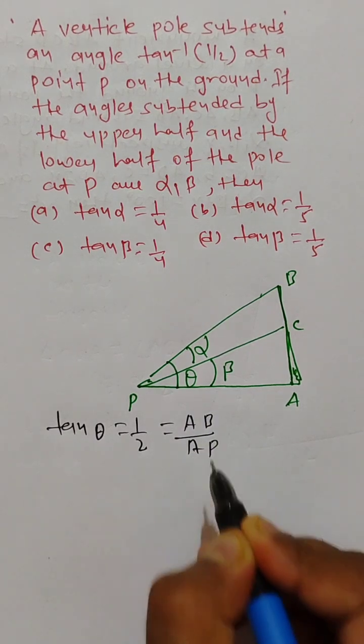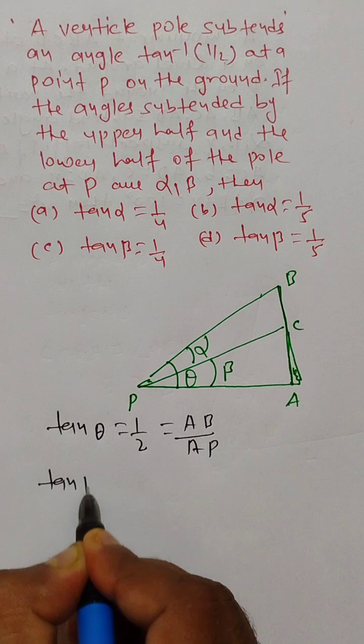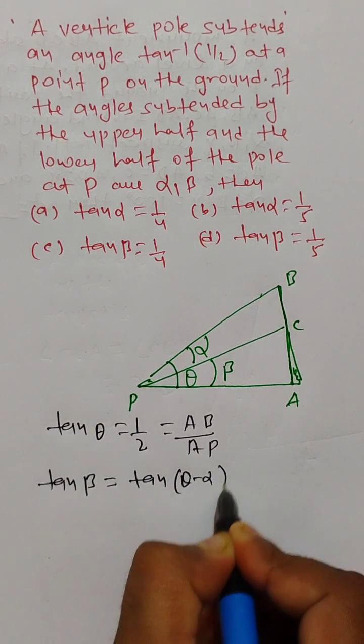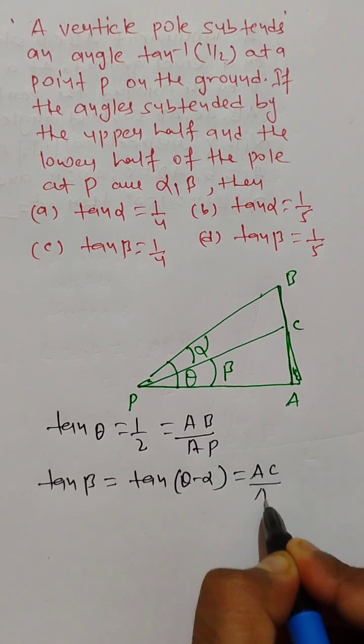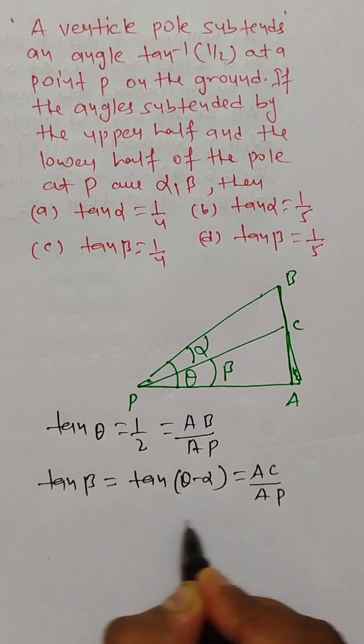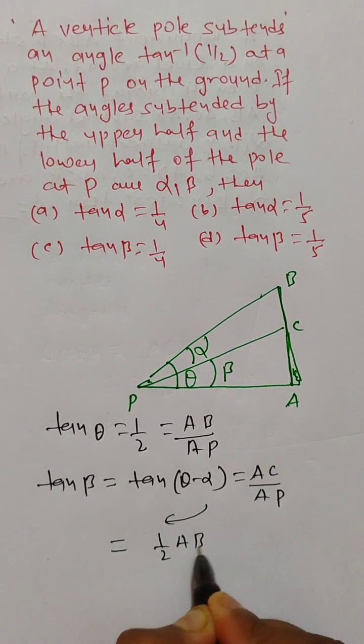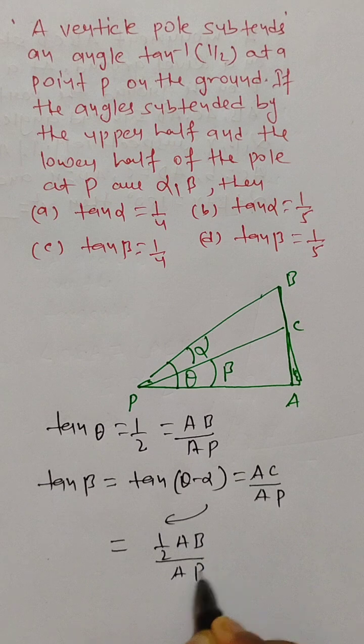And also tan beta equals tan of theta minus alpha, which equals AC by AP, and basically this equals half of AB by AP, this is 1 by 4.